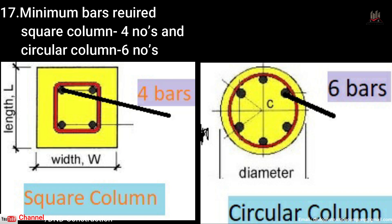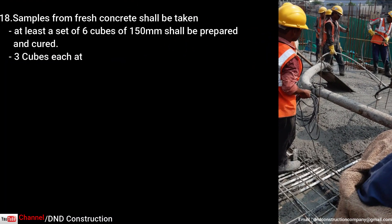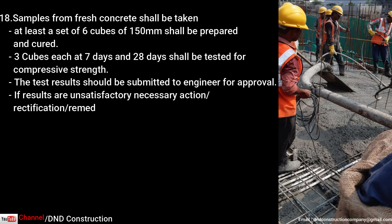Point seventeen: minimum bars for a square column are 4 numbers and for a circular column are 6 numbers. Point eighteen: samples taken for testing of fresh concrete — generally minimum 6 cubes are cast for each sample. The first 3 cubes are tested at 7 days and the other 3 cubes at 28 days. This testing is done generally for every 30 cubic meters of concrete, or for each structural member such as column or slab, or for each batch or brand of cement.